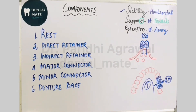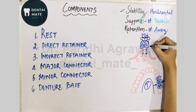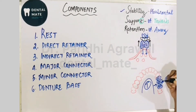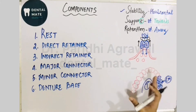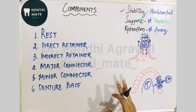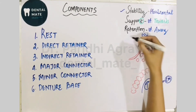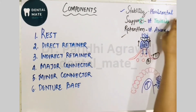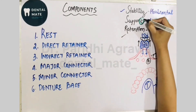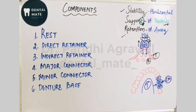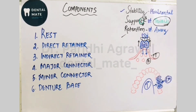Retention is the resistance to movement in the vertical direction away from the tissue. If there is any sticky food material, it would try to drag the prosthesis with it. The resistance to that movement — which is vertically away from the tissue and underlying bone — is called retention. To remember the difference: support ends with 'T' and it is towards the tissue, while retention is resistance away from the tissue.